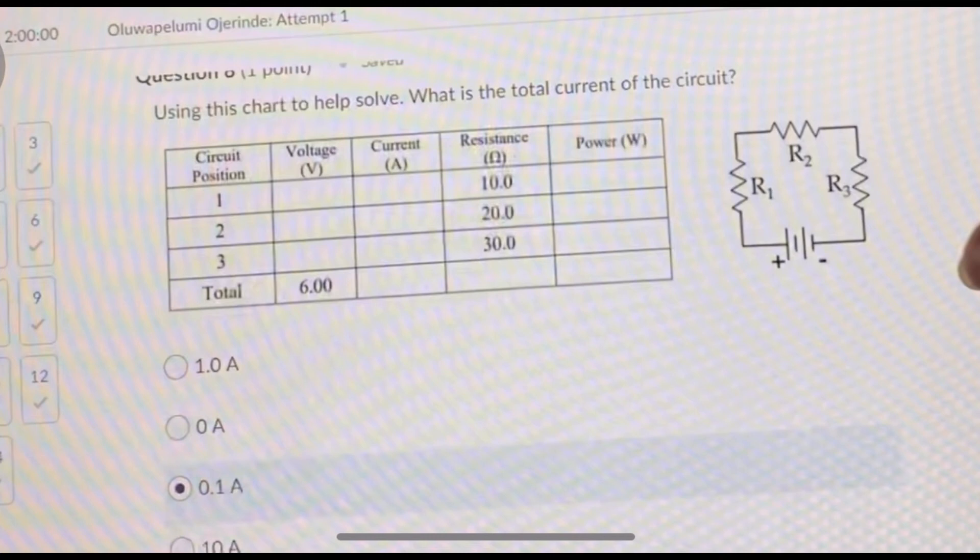If you're trying to find current, we know that current is voltage divided by resistance. So 6 divided by the total resistance which is 60 will give you 0.1 amps, which is your current. Make sure you use your formulas to your own advantage. Know your formulas because they're really going to help you a lot with these problems.